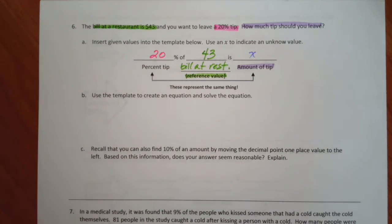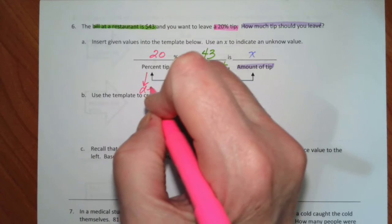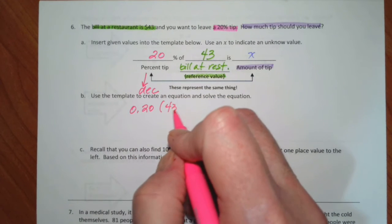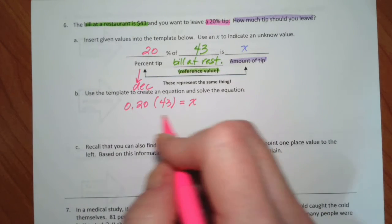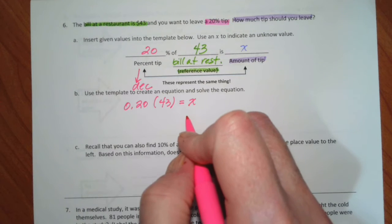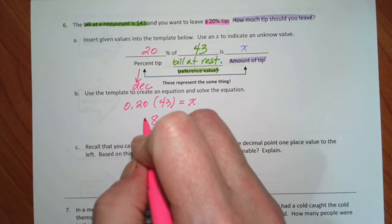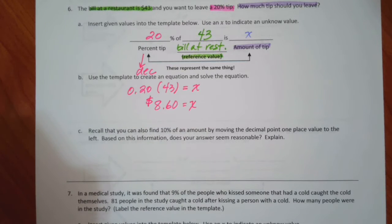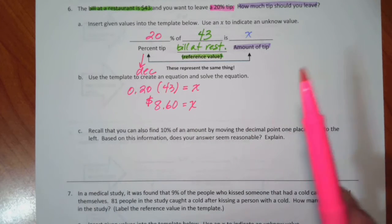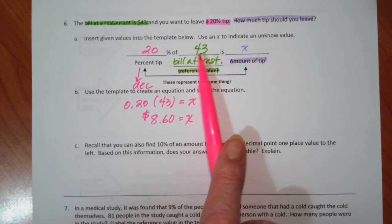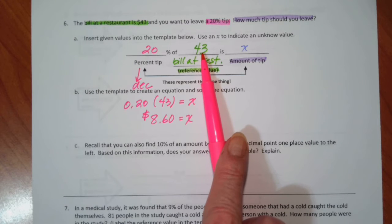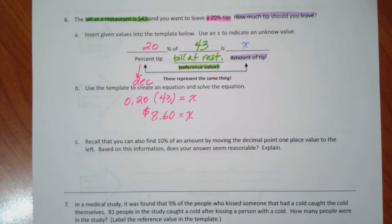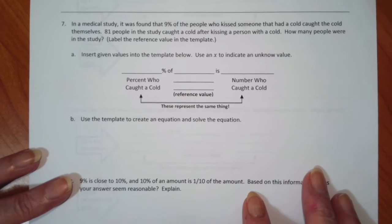I am going to take this and turn it into a decimal. That becomes 0.20 times 43 is x. Now, this is an easy one. If I multiply that out, I get that x is equal to $8.60, and this is a dollar amount. Now, this is another way, and we actually talked about this at the beginning. If you want to find a 20% tip, if it's $43, 10% would be $4.30. You move the decimal over once, and then you double that, and that becomes $8.60.